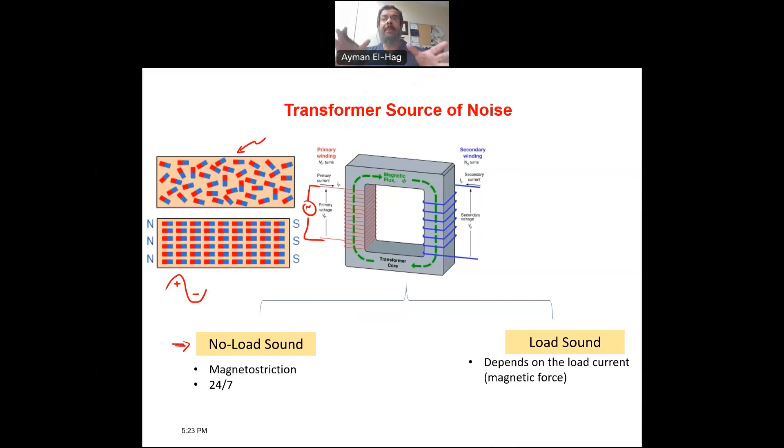Now these vibrations in the core and in the winding will propagate through the transformer oil until it reaches the tank and then it will propagate through the air and we will hear it as a sound. So that is briefly what are the causes of the transformer noise.